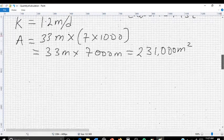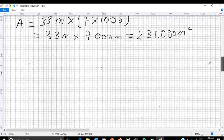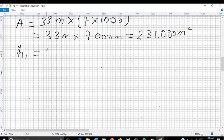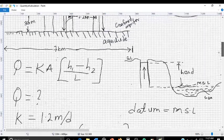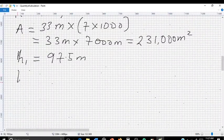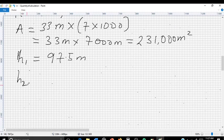Next is H1, which is the head of well A, which is 97.5 meters. And then the head of well B, which is H2, is 89.0 meters.